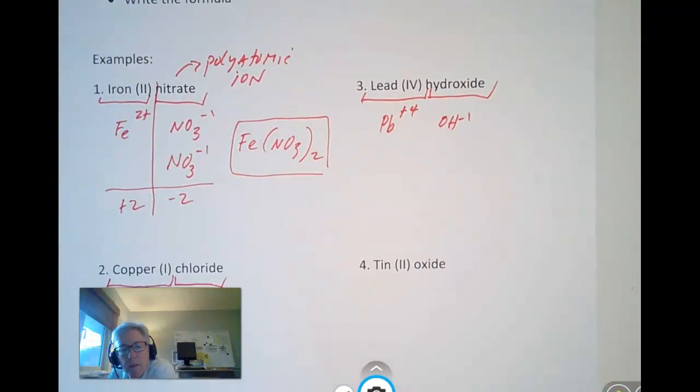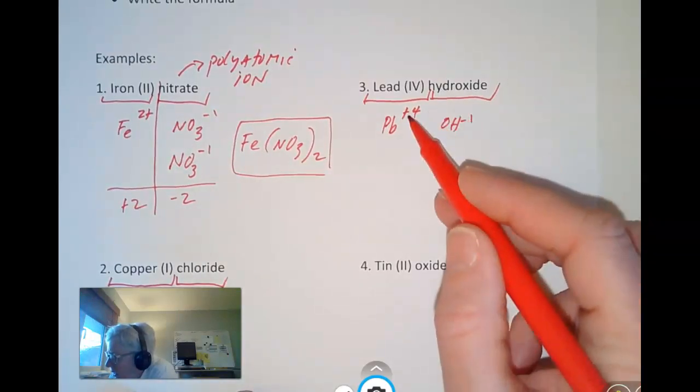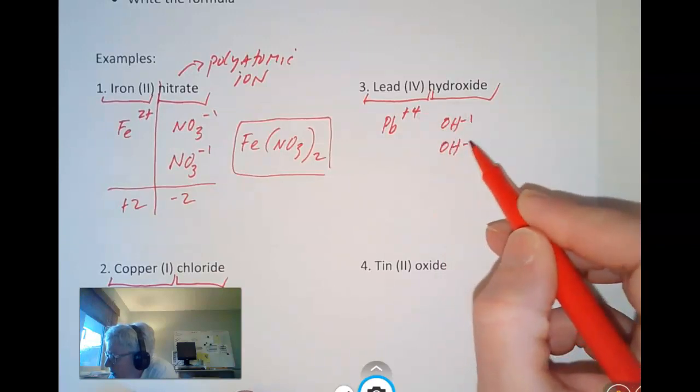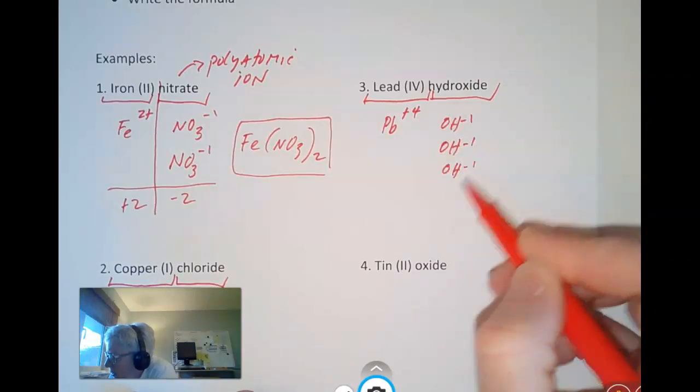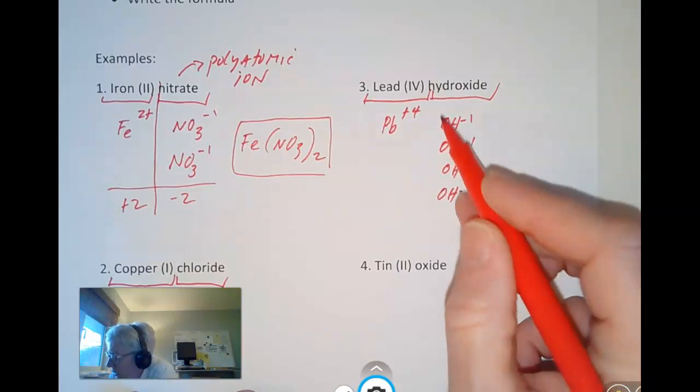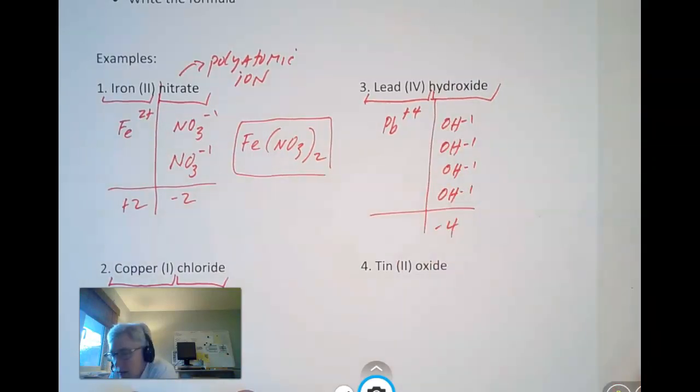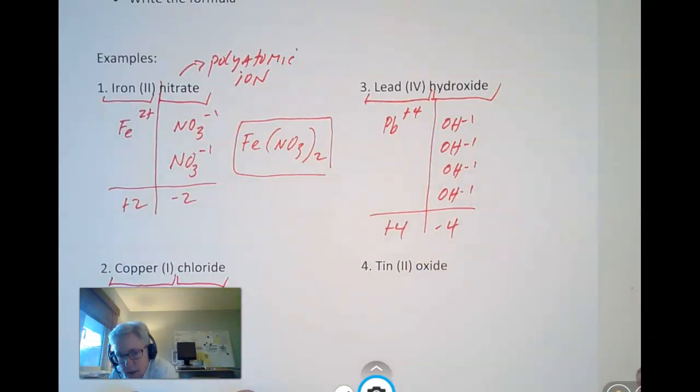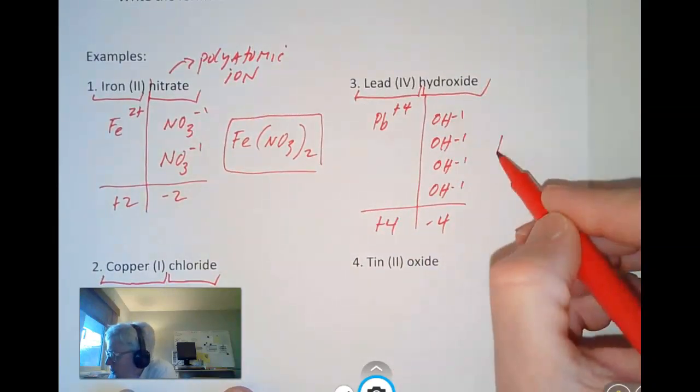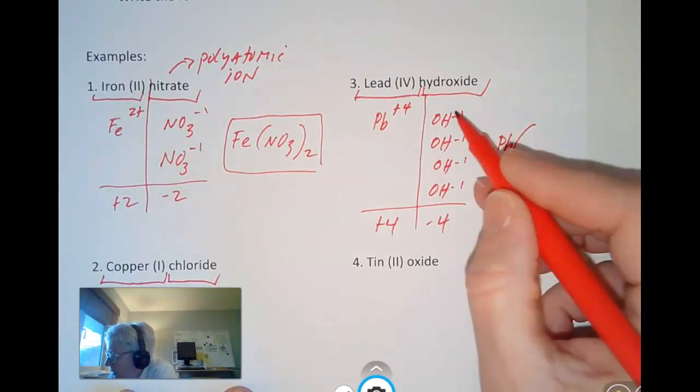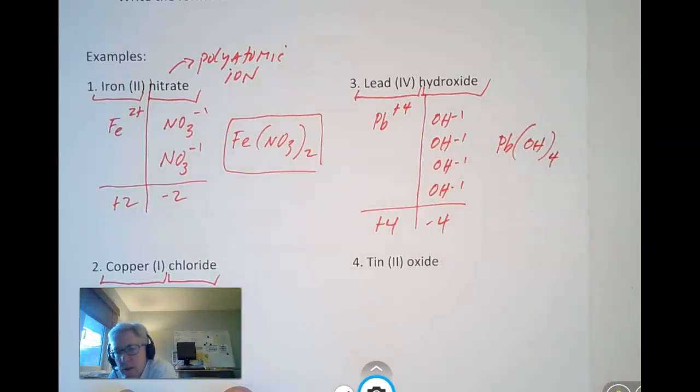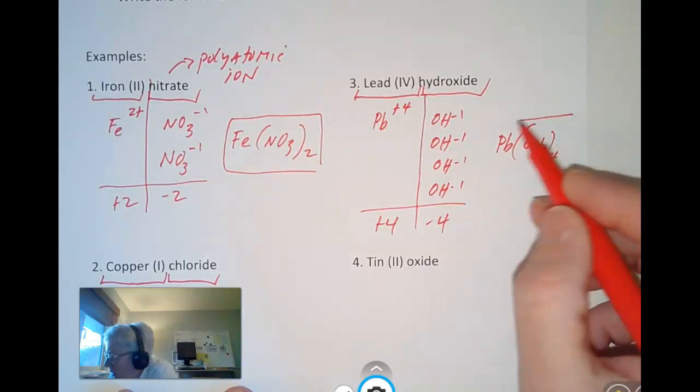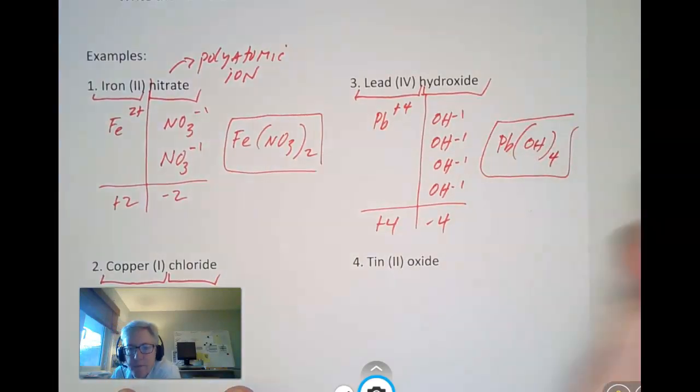And now we've got to look at it and think, how many of those OHs do I need? Because I've got to add up to 4. So I need to add 3 more of these here. So now this anion side equals a negative 4. The cation side equals a positive 4. And I can write my formula. Pb, and I have 4 OHs, so I've got to put parentheses around that polyatomic ion. And there's my formula.